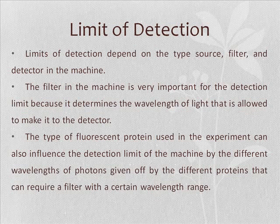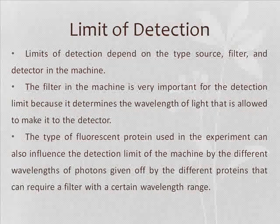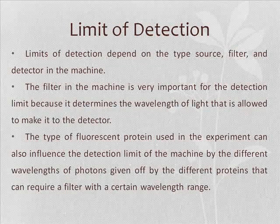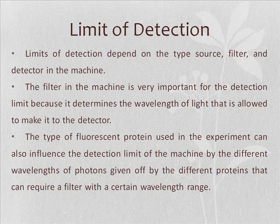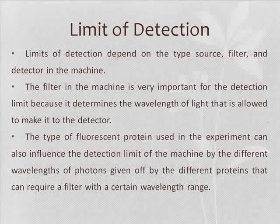There are also different types of fluorescent proteins, and that can really affect your limit of detection. If you're using a green fluorescent protein it'll give off one labeling, whereas a red fluorescent protein will give off another. Your machine will pick up different things depending on what you put into it, so there's really a wide range of limit of detection depending on your machine.